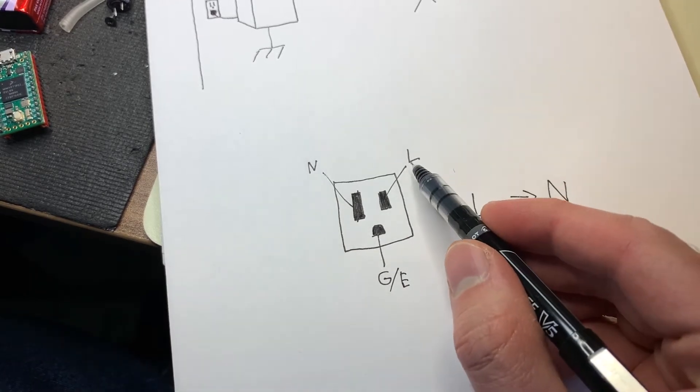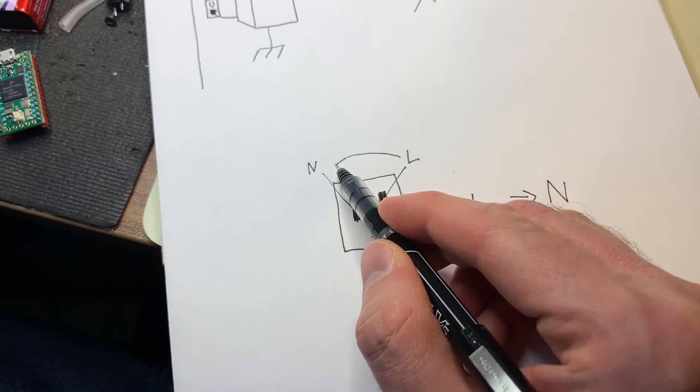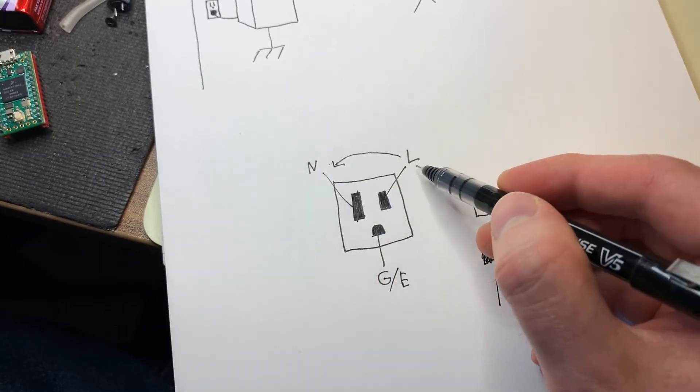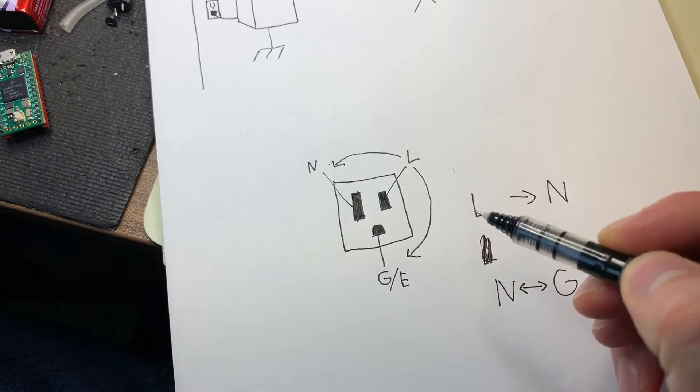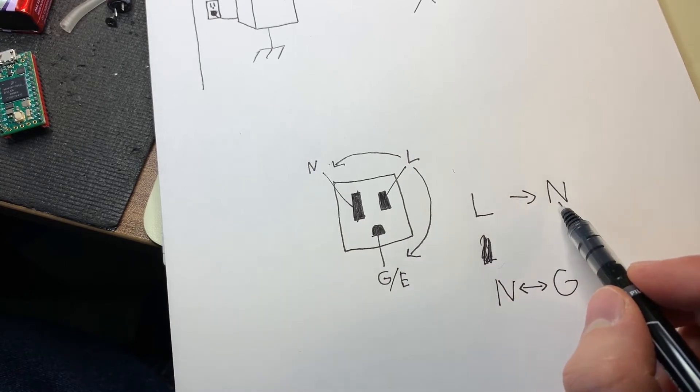So that means when power is coming out of live, it's trying to go back to neutral, but it can also take the path to earth or ground, which will eventually lead it back to neutral.